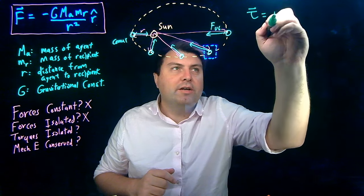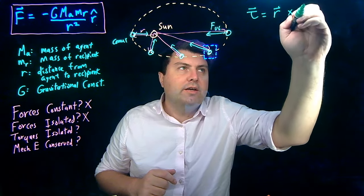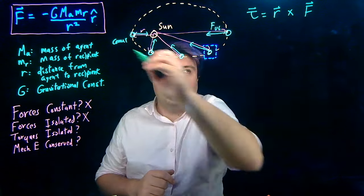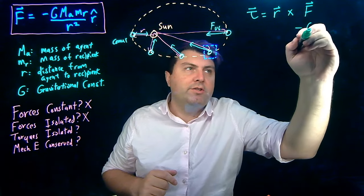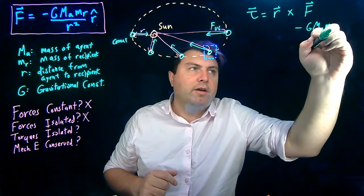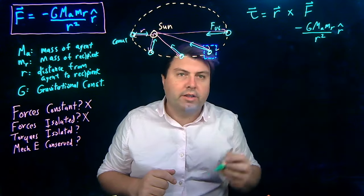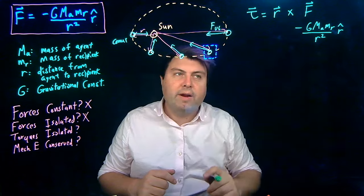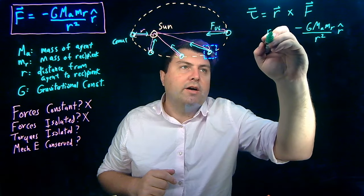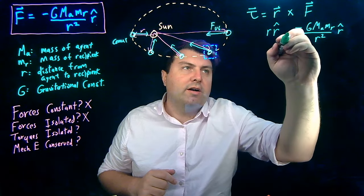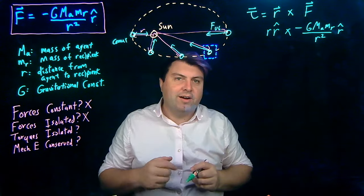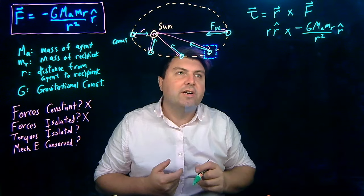Well, we have our torque is equal to r cross F. Our F, as we saw, is equal to negative G ma mr over r squared in the r hat direction. And our radius, we can write as r times r hat. That's our definition of r vector.